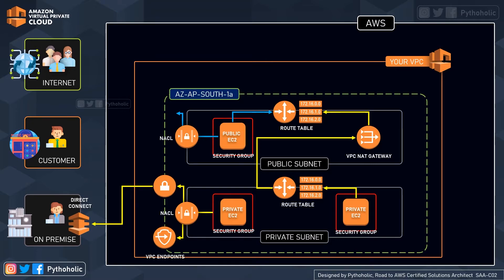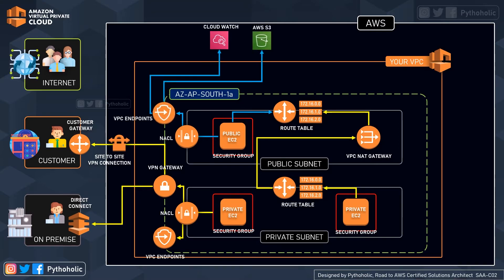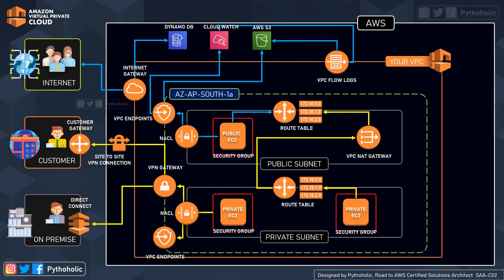Next up, we have Direct Connect to the on-premise location using AWS VPN gateways, or what we call virtual private gateways. Then we have the site-to-site VPN connection along with the customer gateway to connect to our customers so that they have access to our hosted applications. We also have VPC endpoints that enable a private connection between the VPC and other AWS services without requiring internet access. With VPC flow logs, you can capture information about the IP traffic going to and from the network interfaces in your VPC, and this can be published to CloudWatch and S3. And we have the Internet Gateway, which allows communication between your VPC and the internet.